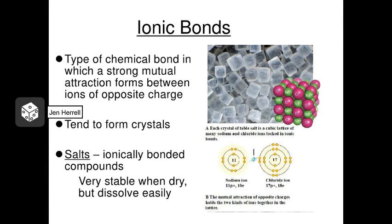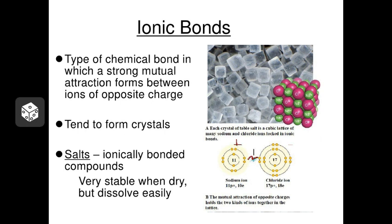When we put anions and cations together, they can form a bond known as an ionic bond. When we put sodium and chlorine together, sodium gives its electron to chlorine, sodium gets a positive charge, chlorine gets a negative charge, and because opposites attract, a bond forms between these atoms. They're not overlapping — they're just attracted to one another, which we show with a little lightning bolt. Compounds that form with ionic bonds tend to form salts, which are crystals. Table salt — sodium chloride — is a great example of an ionically bonded compound.